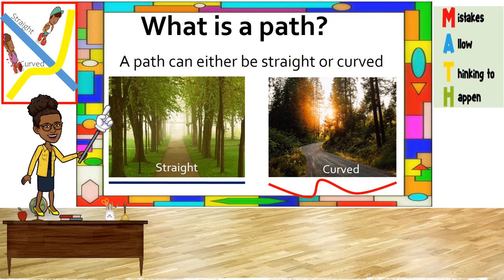If we walk in only one direction, we are walking on a straight path. This blue line represents a straight path. And if we walk in different directions, we are walking on a curved path. This red line represents a curved path.